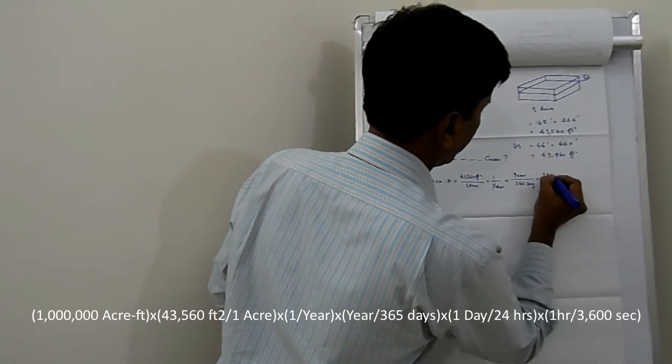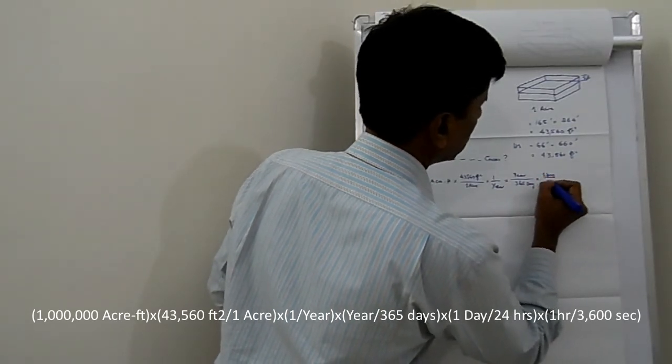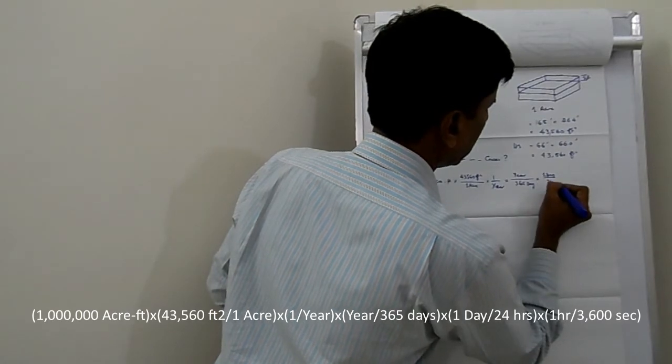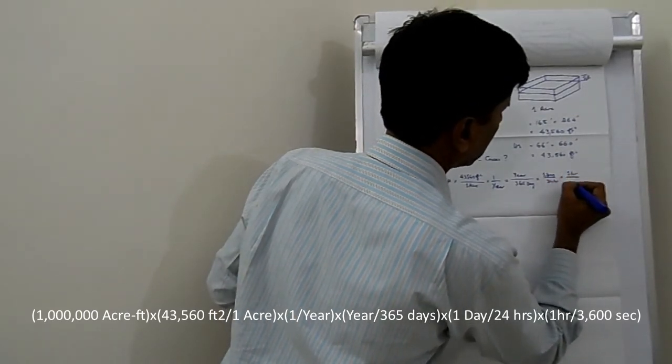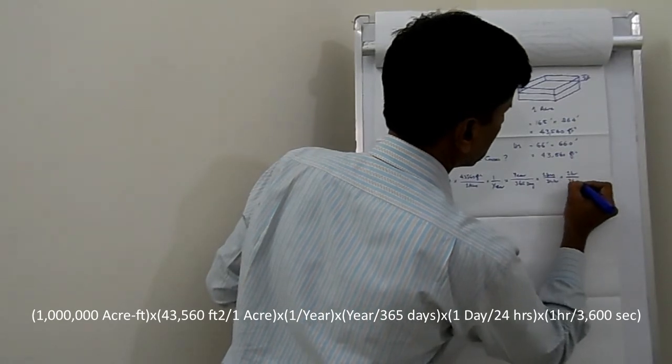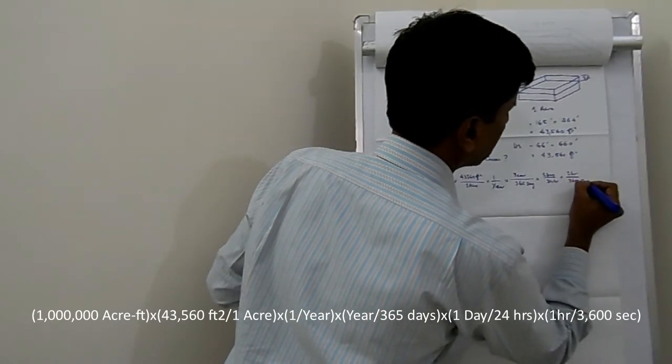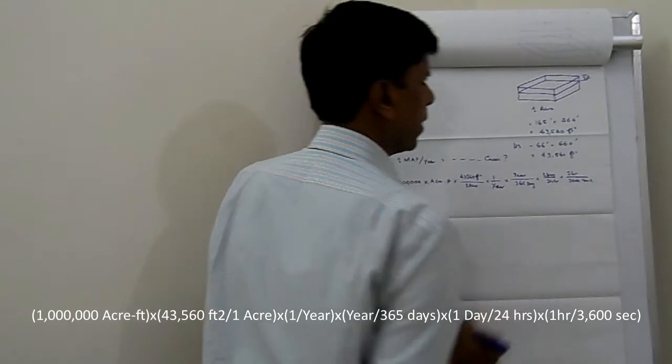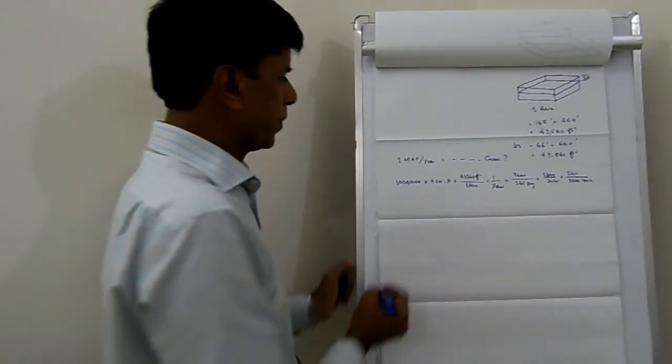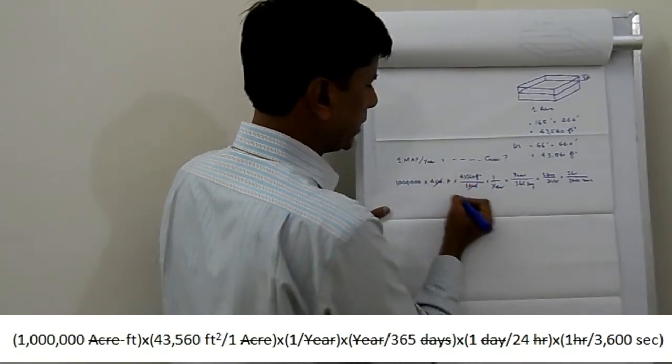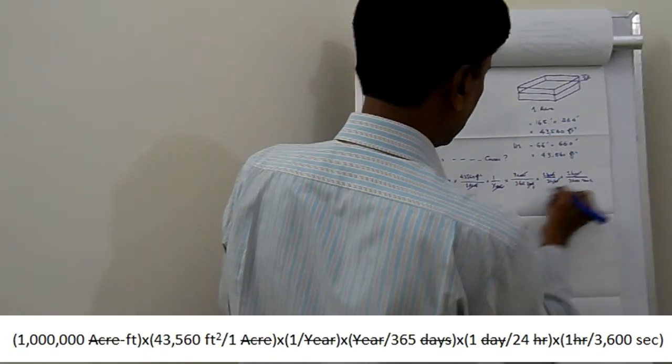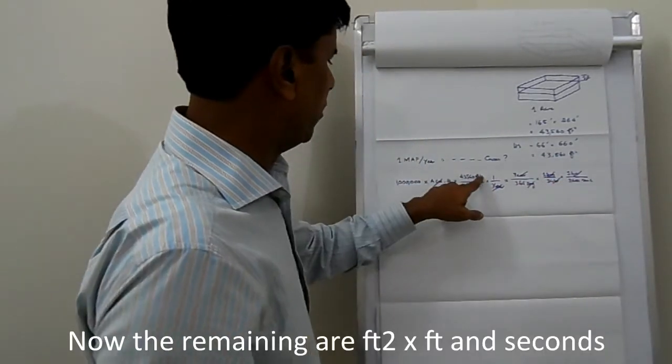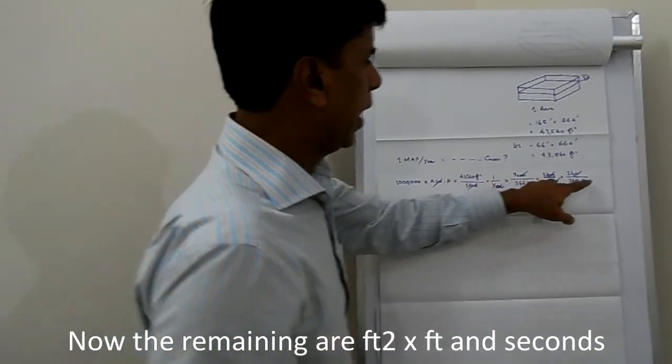And 1 year is equal to 365 days, and one day is equal to 24 hours, and one hour is equal to 3,600 seconds. Now acre will be cancelled, year will be cancelled, day will be cancelled, and hour will be cancelled. Now the remaining in our answer is feet and seconds.